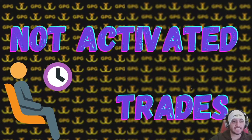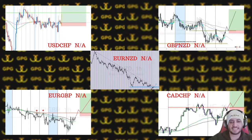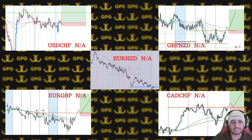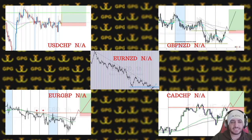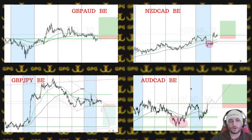Let's get into the session. The first section is not-activated trades — we had five different trades that did not get activated, usually because the break-and-retest or pullback didn't happen the way we wanted, or we got different price action from the original signal.